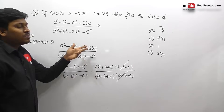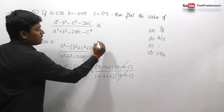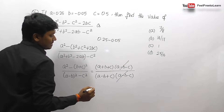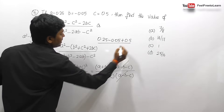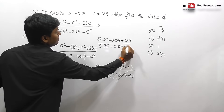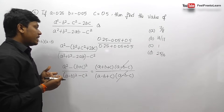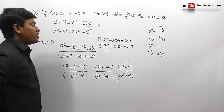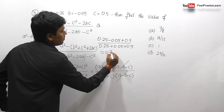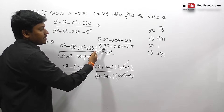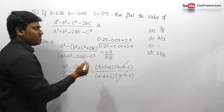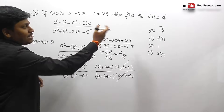After cancellation we get (a + b + c) divided by (a minus b + c). Substituting: a=0.25, b=minus 0.05, c=0.5. Numerator: 0.25 minus 0.05 plus 0.5 equals 0.7. Denominator: 0.25 plus 0.05 plus 0.5 equals 0.8. So the result is 0.7 divided by 0.8, which simplifies to 7 by 8. Option A, that is 7/8, is the answer.